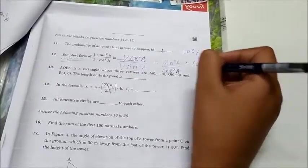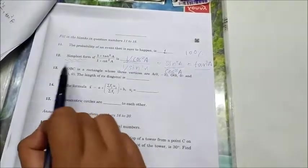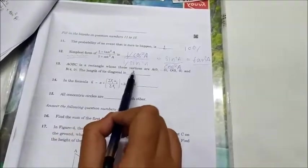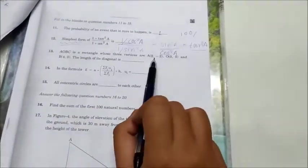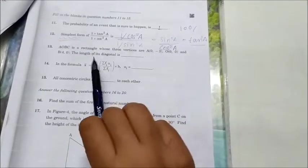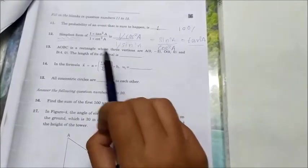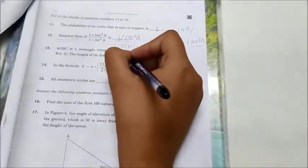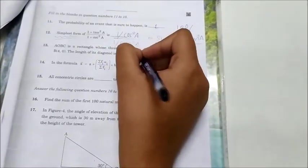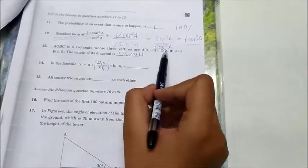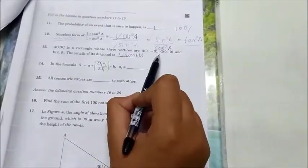Next question number 13: AOBC is a rectangle whose three vertices are A(0, -3), O(0, 0), and B(4, 0). So you will find the answer 10 units because you need to use the distance formula to find the distance between A and B.